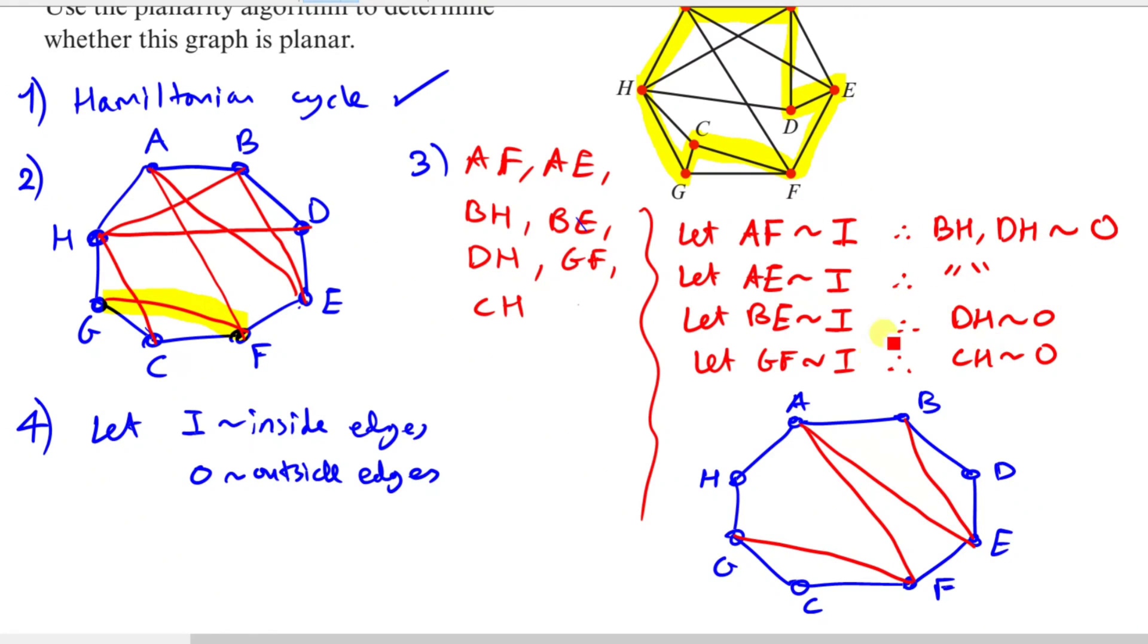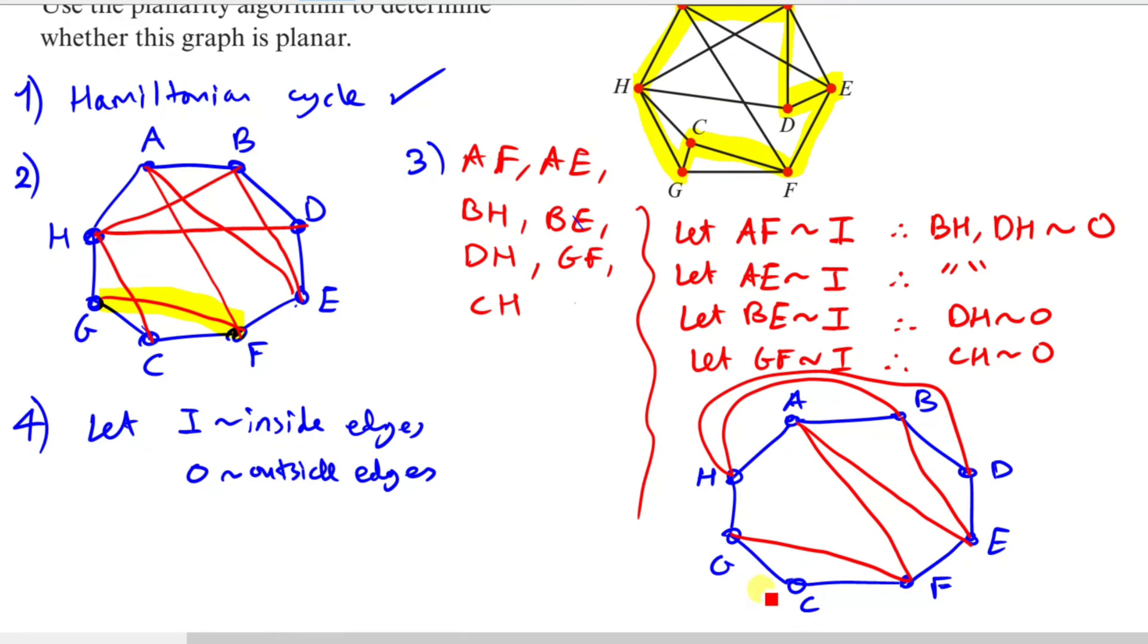And now for the outside ones: BH, DH, and CH. BH is there, so B goes all the way around as a loop to H. Next is DH, so D, just be very careful. And lastly we have CH. And that's it.